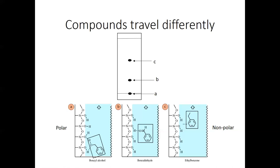So that's the main takeaway. Nonpolar compounds, compounds that primarily contain carbon and hydrogen atoms, those travel pretty far up the TLC plate. Whereas compounds that can hydrogen bond stay very close to the bottom of the TLC plate.